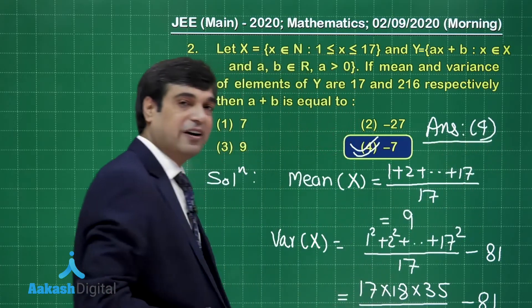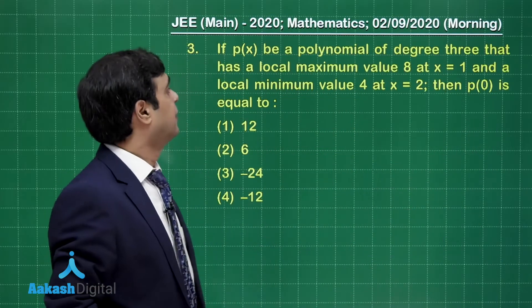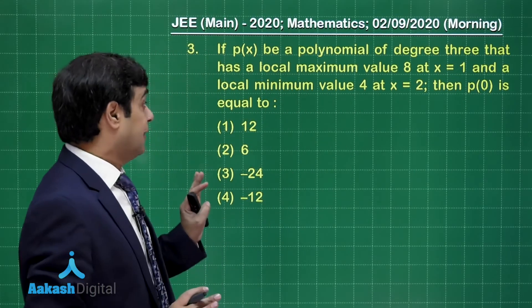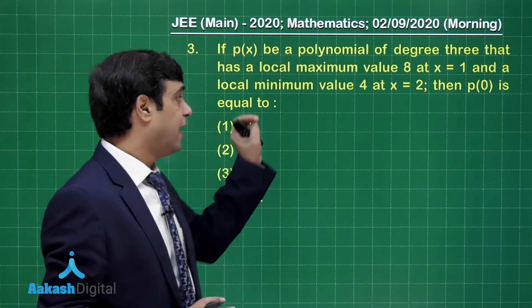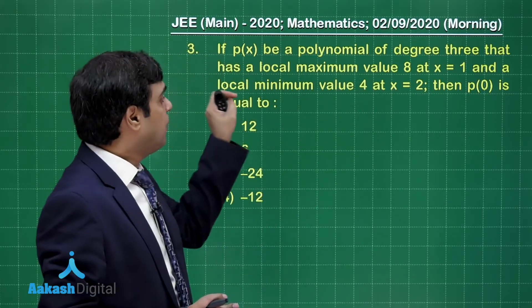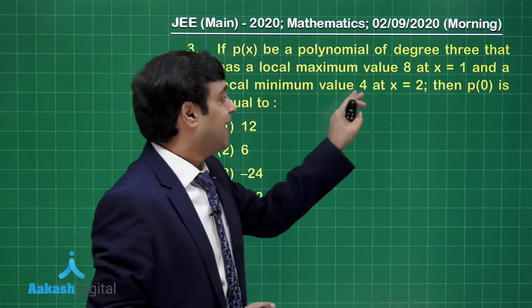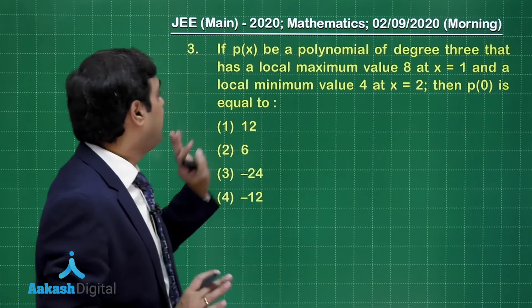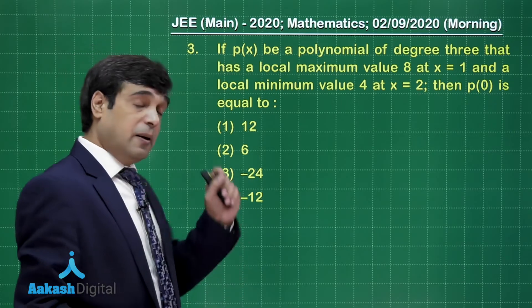Moving forward, let's check out the third question. If p(x) be a polynomial of degree 3 that has a local maximum value 8 at x = 1 and a local minimum value 4 at x = 2, then p(0) is equal to.